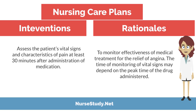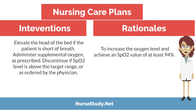Intervention: Assess the patient's vital signs and characteristics of pain at least 30 minutes prior to the administration of medication. Rationale: To monitor the effectiveness of medical treatment for the relief of angina. The timing of vital sign monitoring may depend on the peak time of the drug administered. Elevate the head of the bed if the patient is short of breath. Administer supplemental oxygen as prescribed, and discontinue if the O2 saturation level is above the target range or as ordered by the physician. Rationale: To increase the oxygen level and achieve an O2 saturation value of at least 94%.